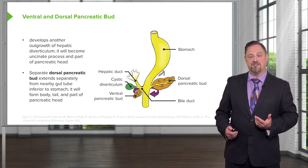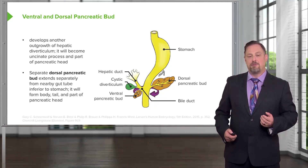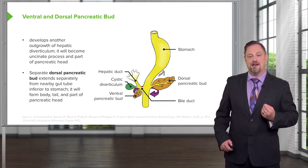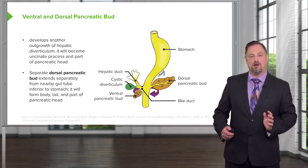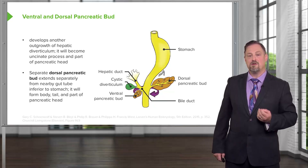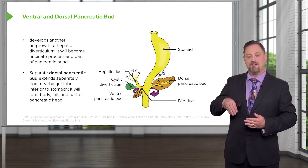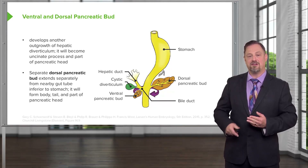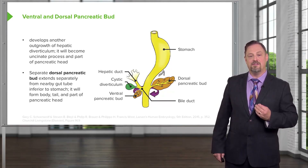As those organs develop, enlarge, and rotate, the ventral pancreatic bud, cystic duct, and common bile duct are all moved into a posterior position. If you know your anatomy, you may remember that the common bile duct enters the duodenum on its posterior side — that's a remnant of this set of rotations.